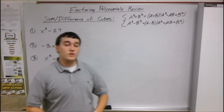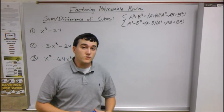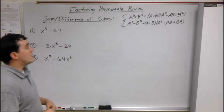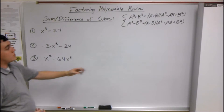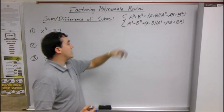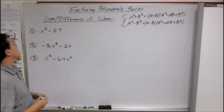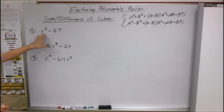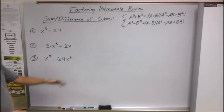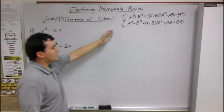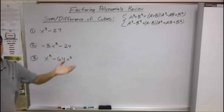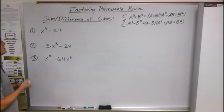Alright, next we're going to look at the sum and difference of cubes. This is a little bit different from the difference of squares because you can do it when it's either plus or minus. So for number 1, we have x³ minus 27, and we're going to use the minus formula.